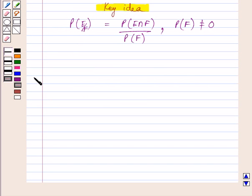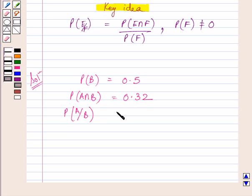Let us now start with the solution. We are given probability of B equals 0.5 and probability of A intersection B equals 0.32. We have to find probability of A when B has occurred.